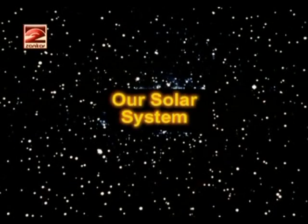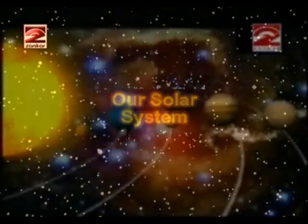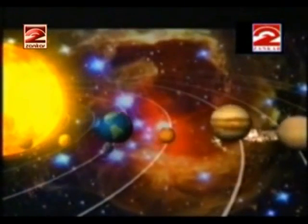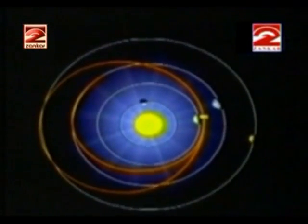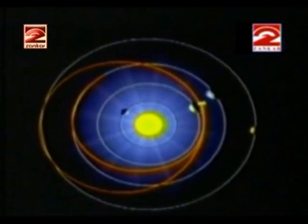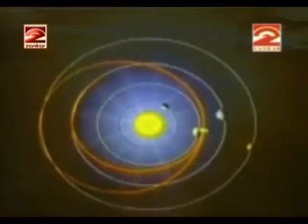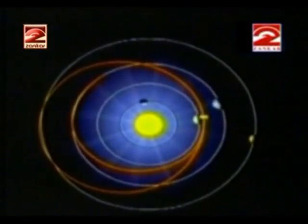Now we will see about our solar system. The Sun, the eight planets that revolve around it, their satellites, asteroids, and comets all together form our solar system. The Sun is the center of our solar system and it is a medium-sized star. The temperature at its surface is about 6000 degrees Celsius and its size is so big that it could hold within itself 13 lakh Earths.